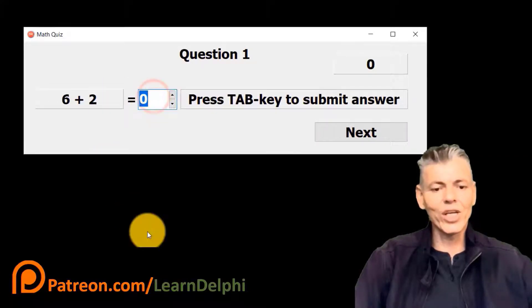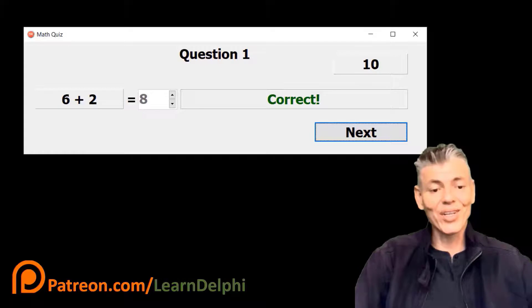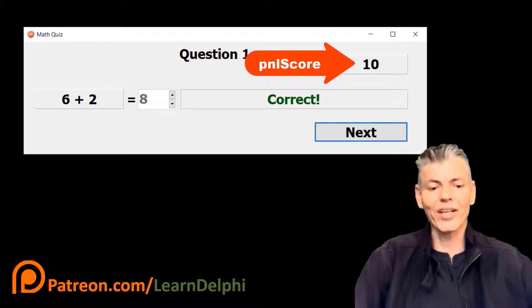After you answer the question in the spin edit, you must press the tab key to move focus away from the spin edit, so that your answer can be assessed. If your answer is correct, this panel displays correct. And this panel gives you 10 points for the correct answer.